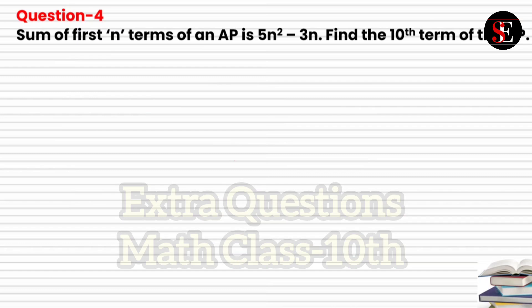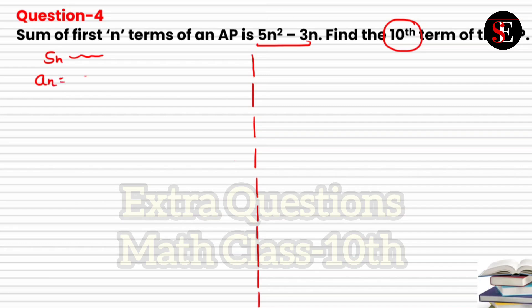Question number 4: The sum of the first n terms of an AP is 5n² − 3n. Find the 10th term. This problem can be solved in two ways — I'll explain both. The first method uses the direct relation: the nth term equals Sn − Sn−1. So if a₁₀ is asked, we compute S₁₀ − S₉. This gives us the 10th term directly.